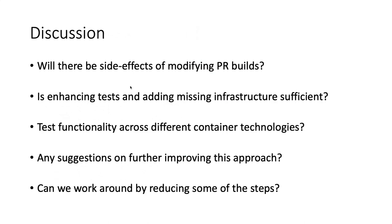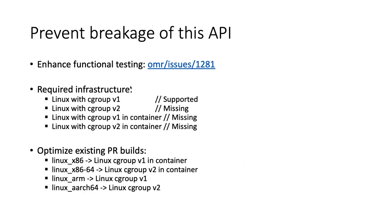For discussion, there is a list of questions to work through. The first is whether there will be side effects of modifying PR builds in the suggested manner. A question was raised about what testing currently exists for the cgroup API — even for V1. There appears to be only one test, which exercises only one function: testing the limit. Many other functions have no tests at all. The proposal is to round out the testing for both V1 and V2 by providing tests for each of the API methods.